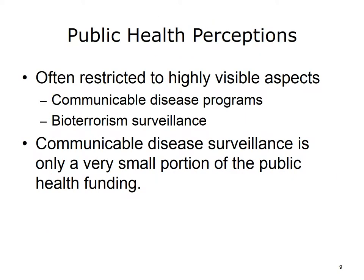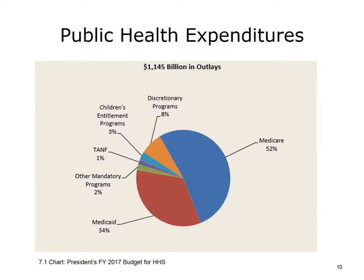While certain aspects of public health, such as communicable disease outbreaks and bioterrorism surveillance, tend to attract more media attention, this attention does not always represent the actual investment of public funding and efforts. For example, as shown in the President's Budget Chart for 2017 for the Department of Health and Human Services, Medicare and Medicaid actually consume the majority of budget expenditures. The Affordable Care Act provided insurance to an additional 18 million Americans through the expansion of Medicaid.